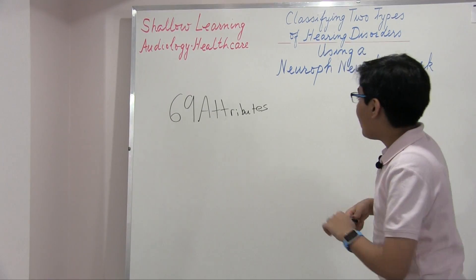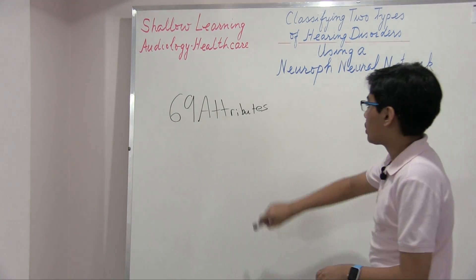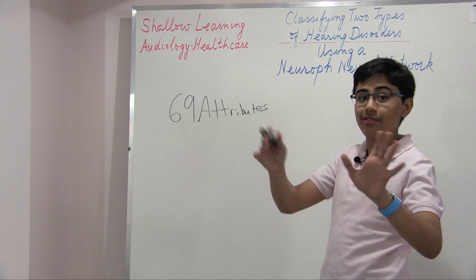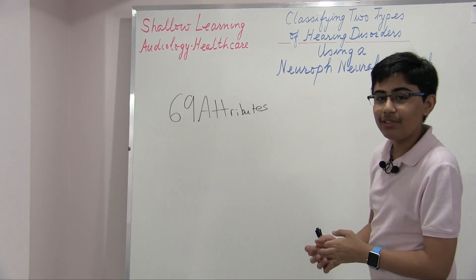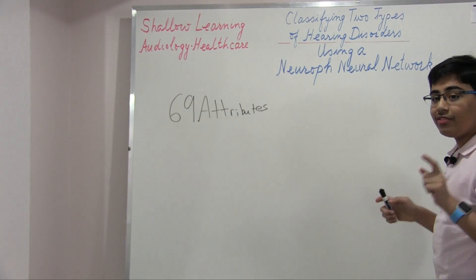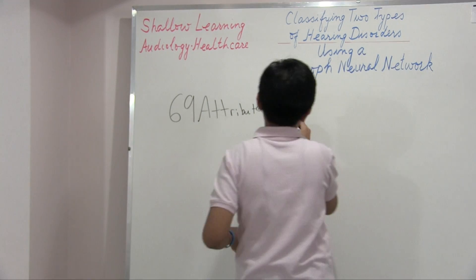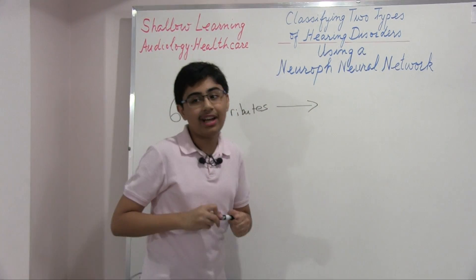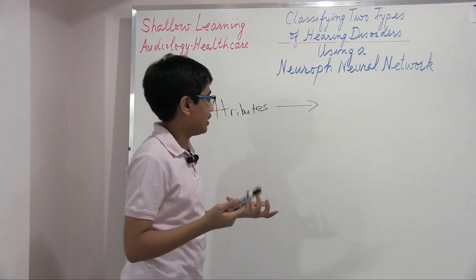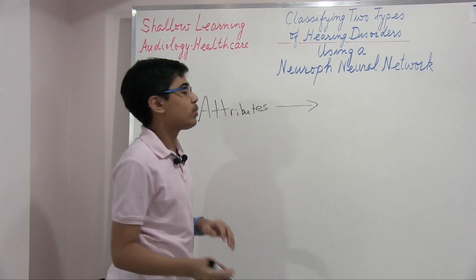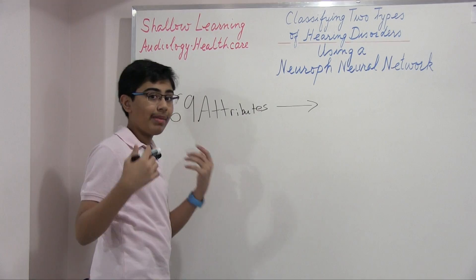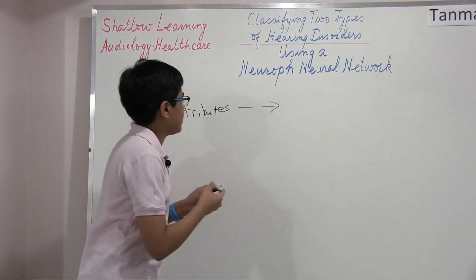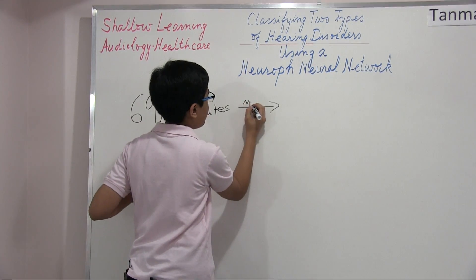The 69 attributes will go to a hidden layer. The hidden layer will calculate some values, and then those values will give us our output, which will classify what type of hearing disorder the person has. We input 69 attributes about our patient and send that through the neural network — this is our neural network phase.